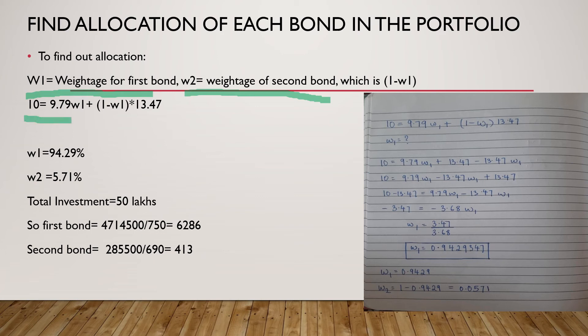Then you will have to write this equation. The equation that we are writing is 10 = 9.71 × w1, which is the duration of the first one, plus (1 - w1) multiplied by 13.27, which is duration of the second bond. By solving this equation which I have provided as the solution here, you will be able to reach a weightage of 94.29% for Bond A and 5.71% weightage for the second one.